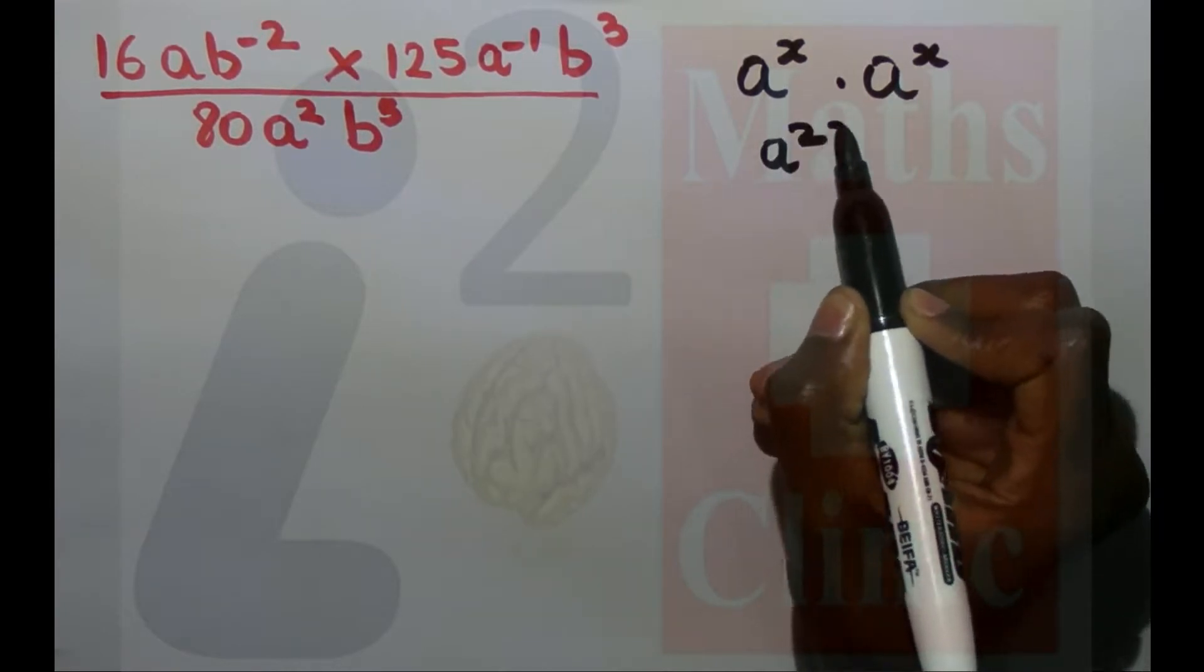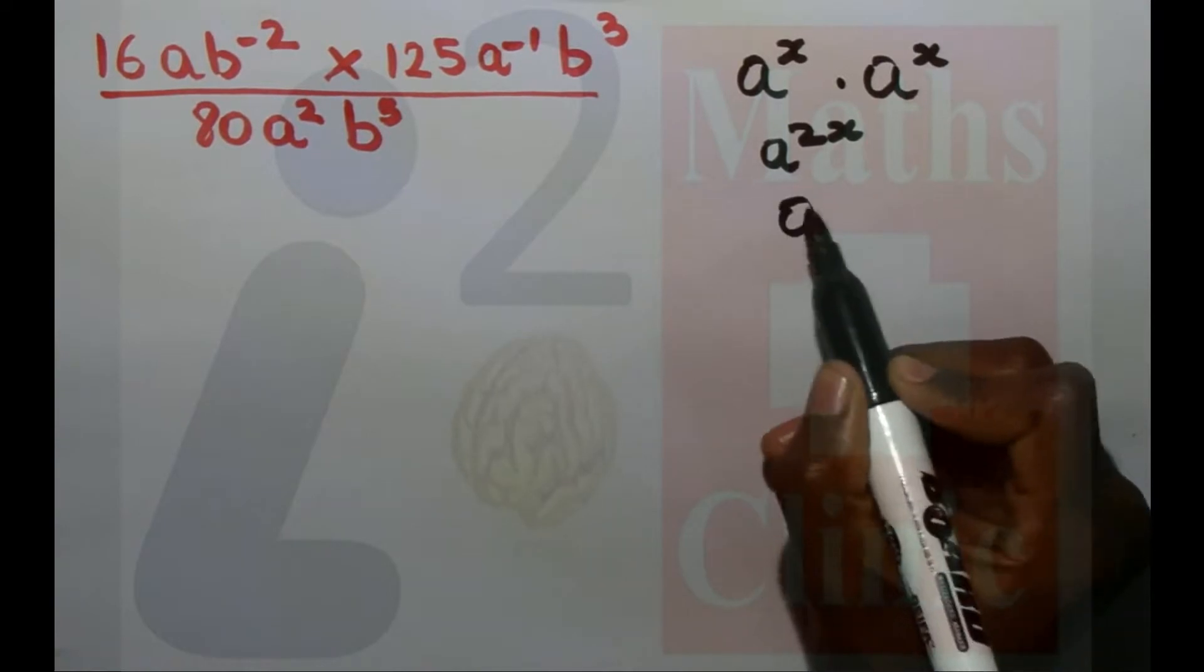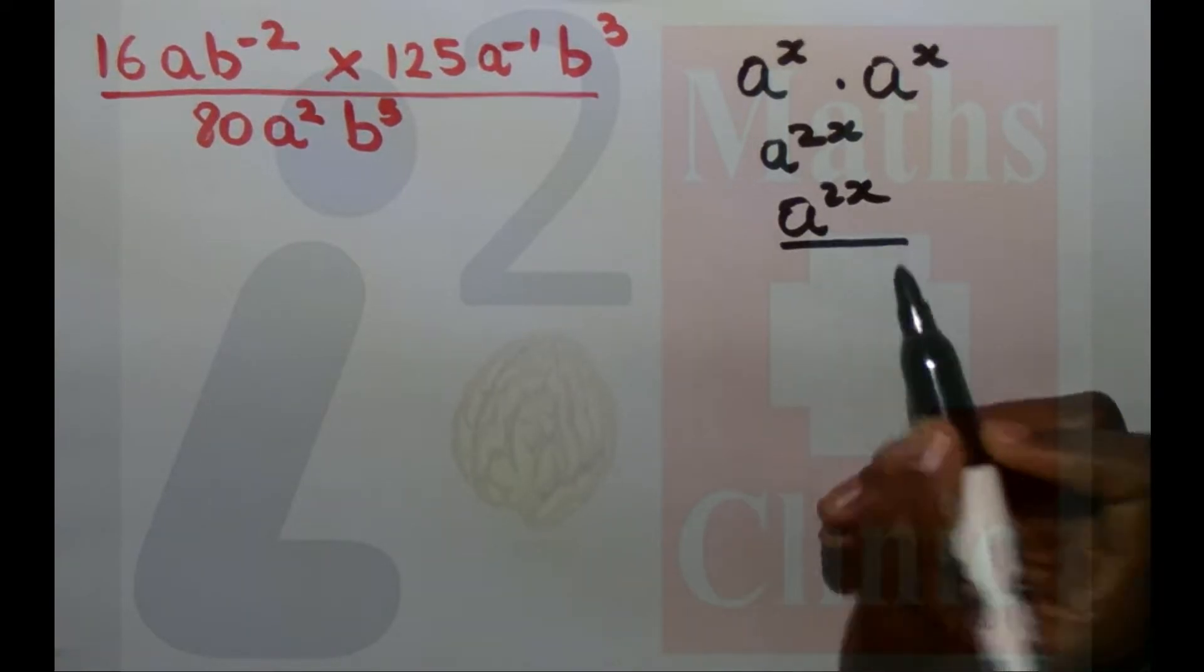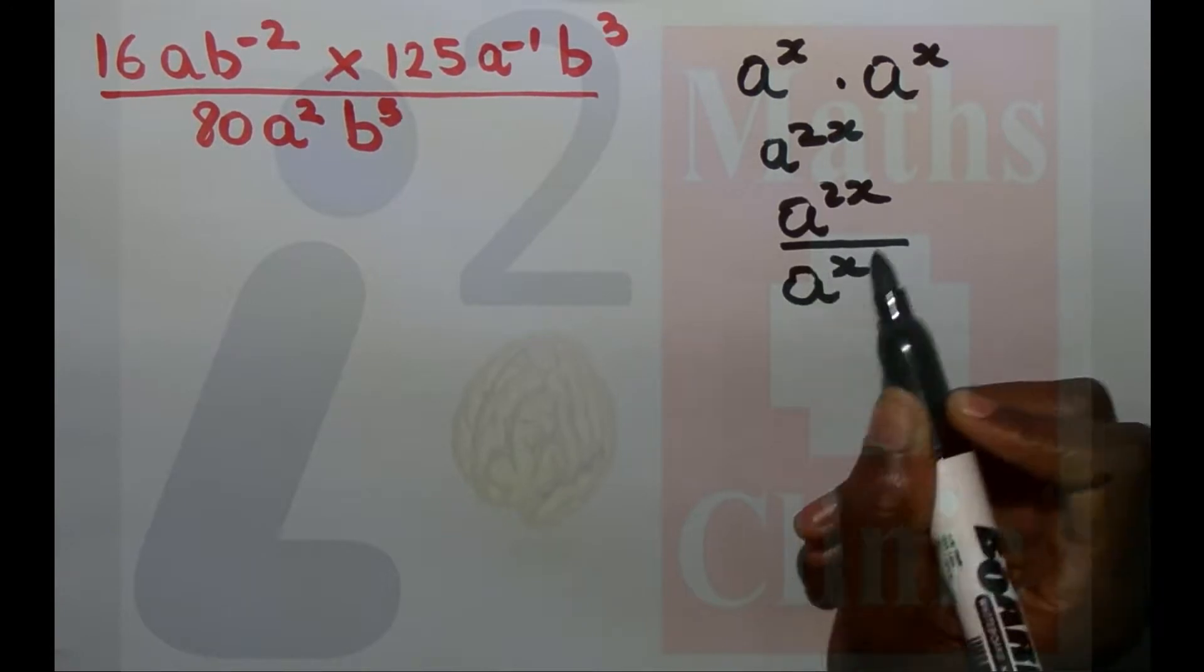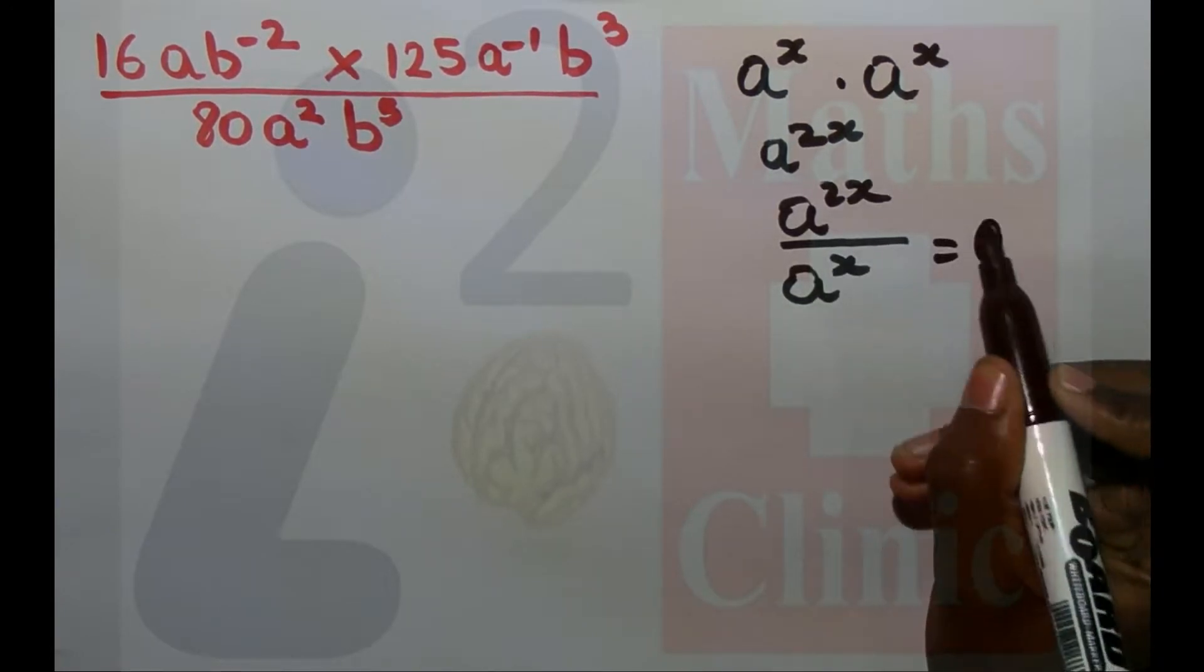So it's going to be a equal to 2x, so this is my x plus x. And also, when I divide the exponents, sorry, the whole divided the basis, so subtract the exponents, okay.